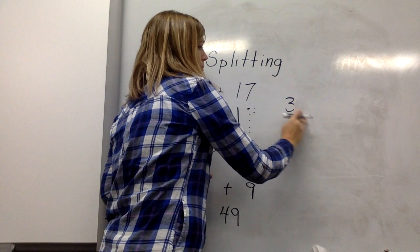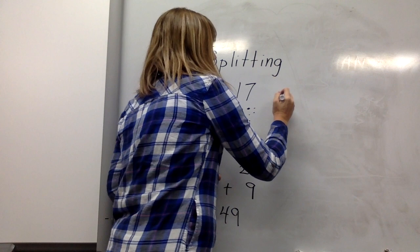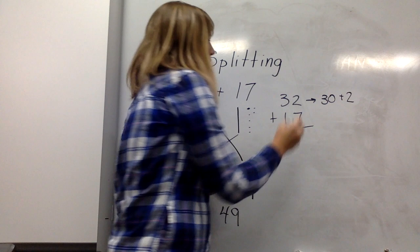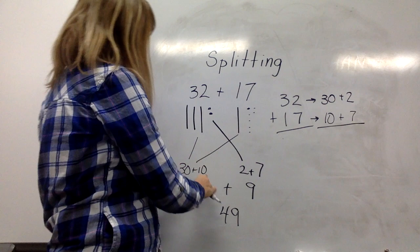When we begin to stack our numbers, it looks like 32 plus 17. We can split 32 into 30 and 2, and we can split 17 into 10 and 7.